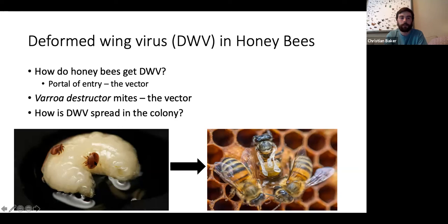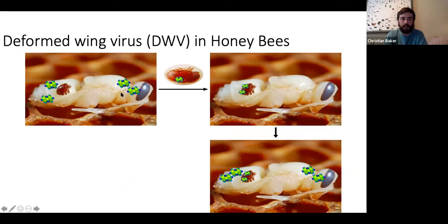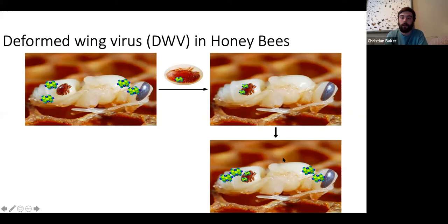How is deformed wing virus spread within the colony? A honeybee has a few copies of the virus, and a Varroa mite goes and feeds on that honeybee, picking up copies of the virus. The virus is also thought to replicate within the mite. That mite then feeds on another healthy honeybee and injects copies of the virus, which then replicates within that new honeybee. The more often this happens, the more bees will carry the virus at higher levels.